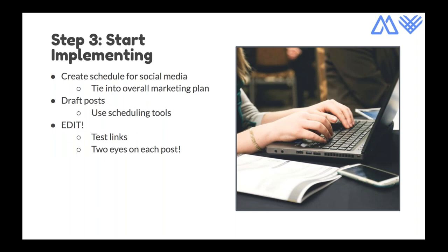The last step of planning is putting everything together into motion. Start scheduling posts — scheduling your key content ahead of time will help tie your social media efforts into your other efforts like email so you have a cohesive plan for Giving Tuesday. Draft your posts with scheduling tools and edit them: test links, check images display correctly, and copy-edit for typos. I recommend having two pairs of eyes in addition to yours on each post to make sure your copy is clean.